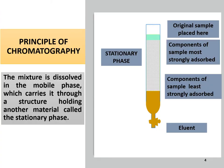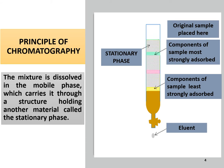The principle of chromatography: the mixture is dissolved in the mobile phase which carries it through a structure holding another material called the stationary phase. So chromatography uses two phases: stationary phase and mobile phase. The components present in the mixture are either adsorbed on the stationary phase or remain soluble in the mobile phase on the basis of their affinities towards the stationary and the mobile phases. Components that are strongly adsorbed on the stationary phase are eluted later, and the components that are least strongly adsorbed on the stationary phase or are more soluble in the mobile phase are eluted first.